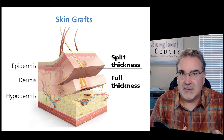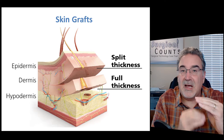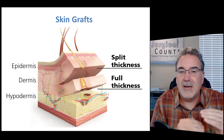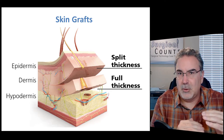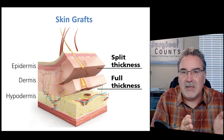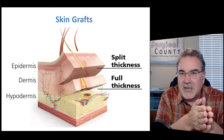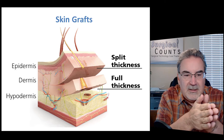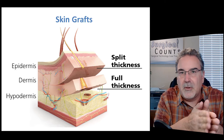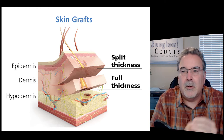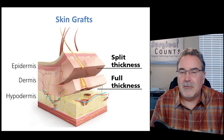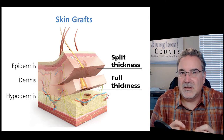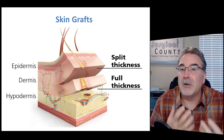A full thickness skin graft is when we take the entire epidermis and the entire dermis all the way down to the hypodermis, that fatty layer. In a case like this, we're usually going to suture the skin back together — not leaving a hole — just bringing the existing skin back together to cover where we took the graft from.